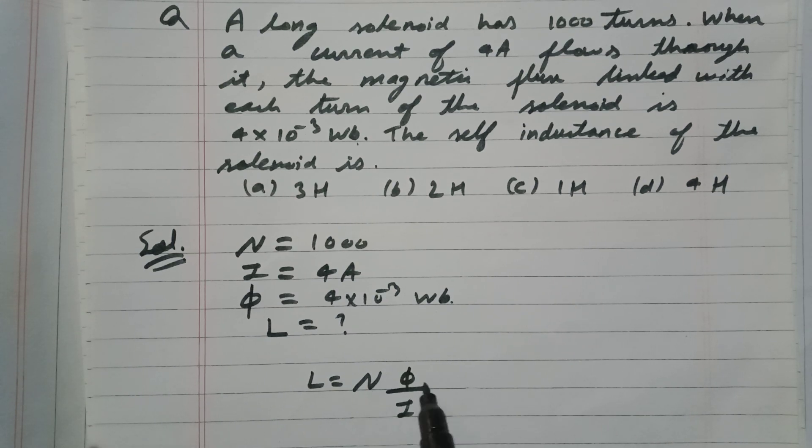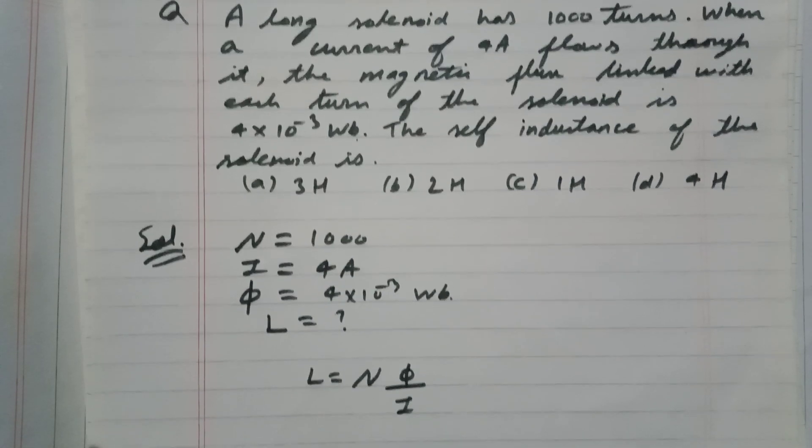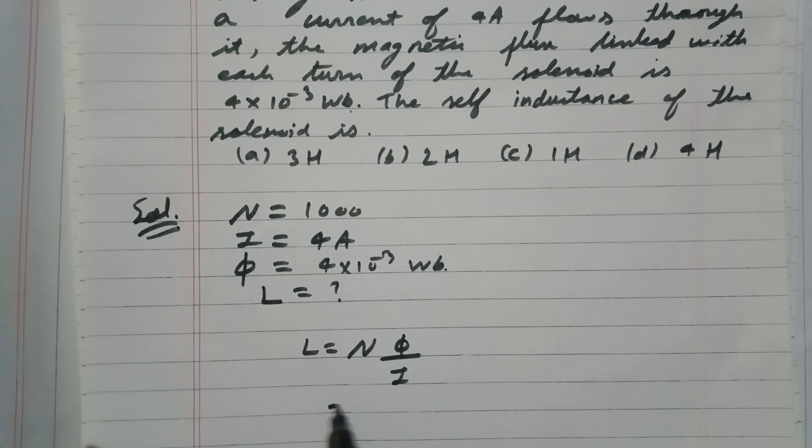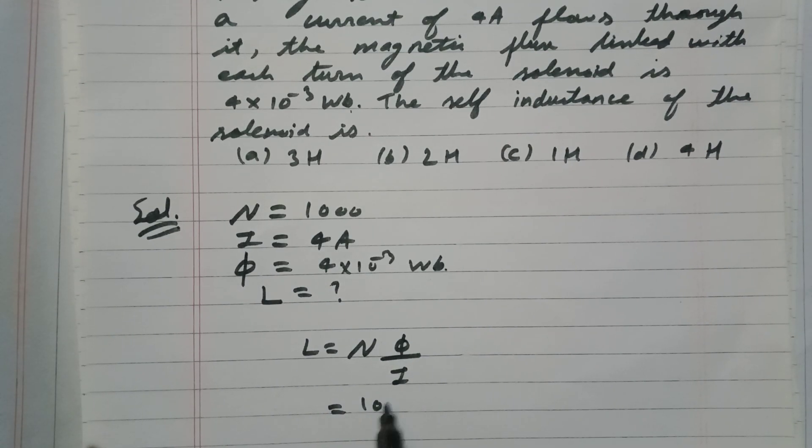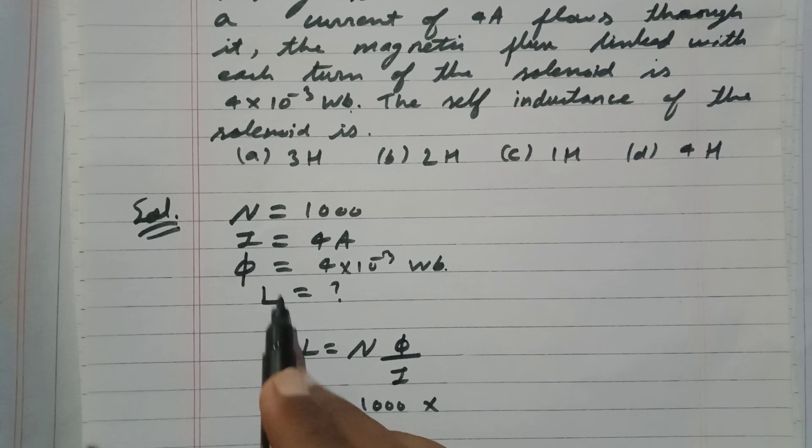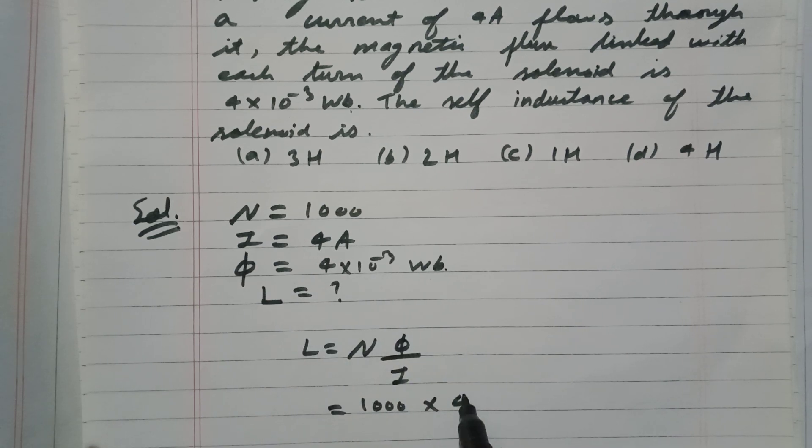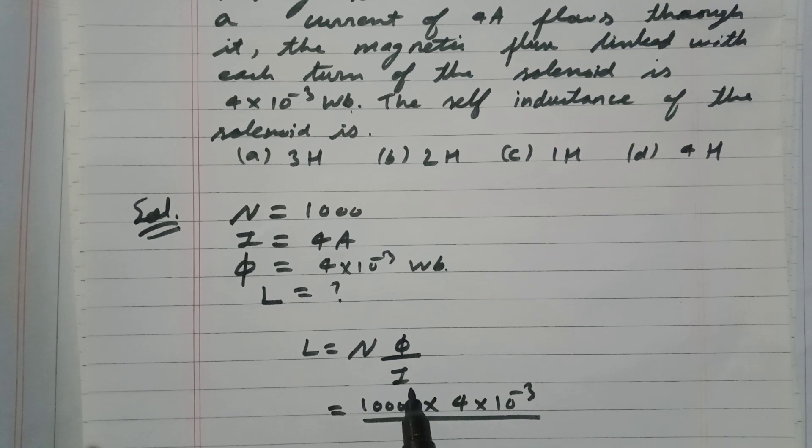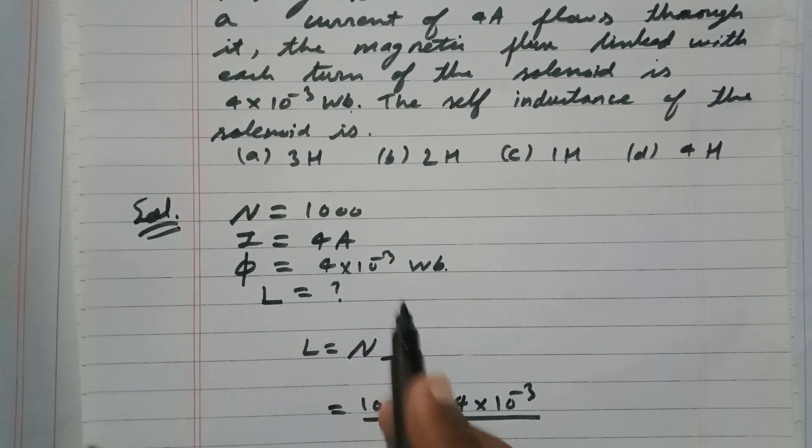I is the current. So in my case, N is 1000, φ is 4×10^-3, so 4×10^-3 divided by I. I is 4 ampere, so 4×10^-3 divided by 4.